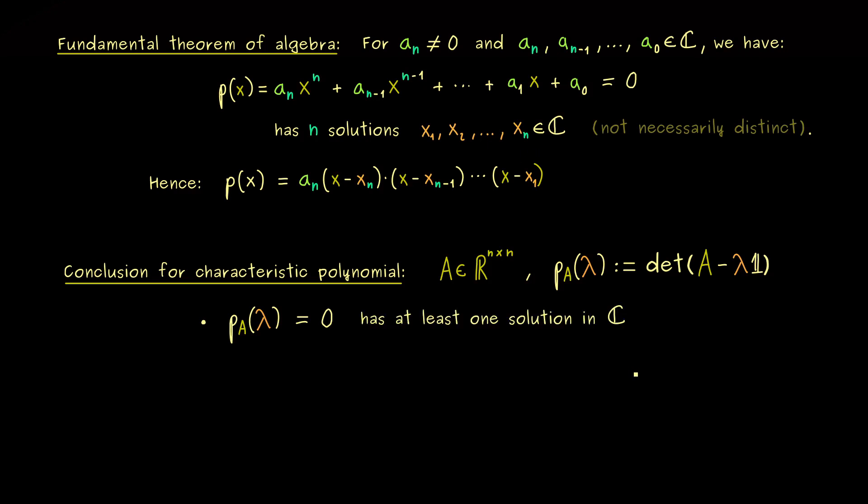First thing we can say: pₐ(λ) = 0 has at least one solution in ℂ. So we can't say that we always find real solutions, but we can say that we always find complex solutions. This means if we expand everything to the complex numbers we can conclude that a matrix always has at least one eigenvalue.